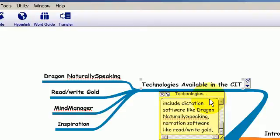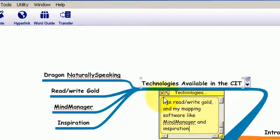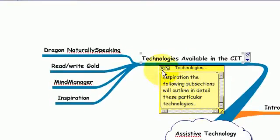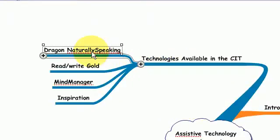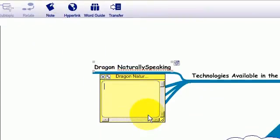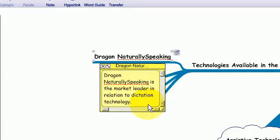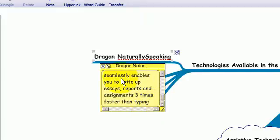The following subsections will outline in detail these particular technologies. Dragon NaturallySpeaking is the market leader in relation to dictation technology. It seamlessly enables you to write up essays, reports and assignments three times faster than typing. So now I just press the X, I close down the notes that I've added.